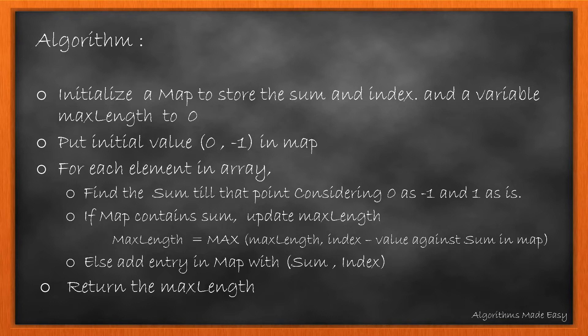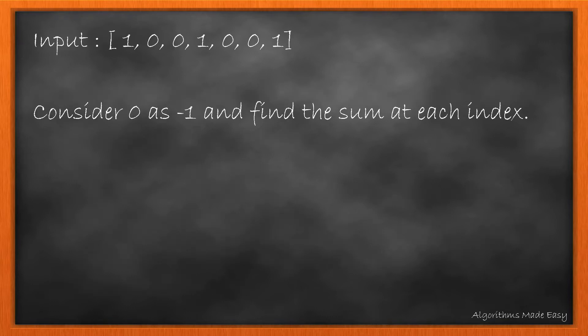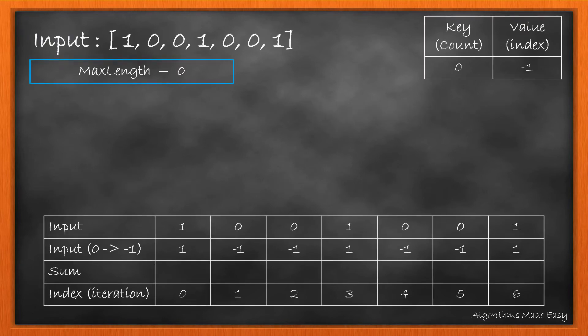Let's see it with an example. Given the input, let's take an updated input for simplicity on which we will calculate the sum. It will look like this. Now, let's prep our initial stage. Max length is 0. Initial map contains 0 as key and –1 as value.